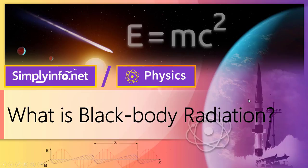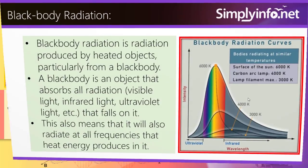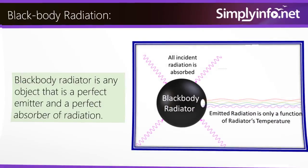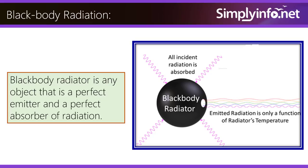What is Blackbody Radiation? Blackbody radiation is radiation produced by heated objects, particularly from a blackbody. A blackbody is an object that absorbs all radiation that falls on it. This also means that it will also radiate at all frequencies that heat energy produces in it. A blackbody radiator is any object that is a perfect emitter and a perfect absorber of radiation.